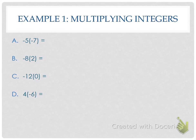Everybody knows what 5 times 7 is — it's 35. But is my answer positive or negative 35? The answer is positive because how many negatives do you have? Two, and that is an even number. If you have an even number of negatives, it is a positive answer. If you have an odd number of negatives, it is a negative answer. So 35. And then negative 8 times 2, which is 16, but since we only have one negative, it's negative 16. Odd number of negatives, negative answer.